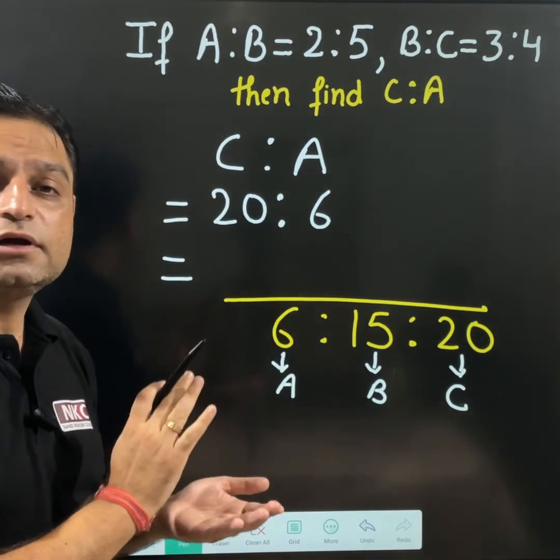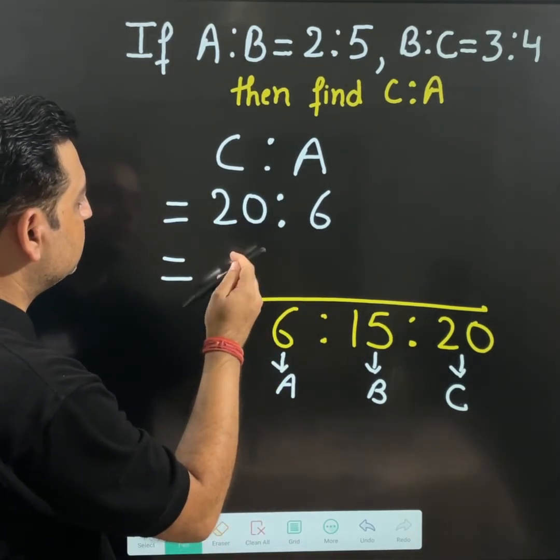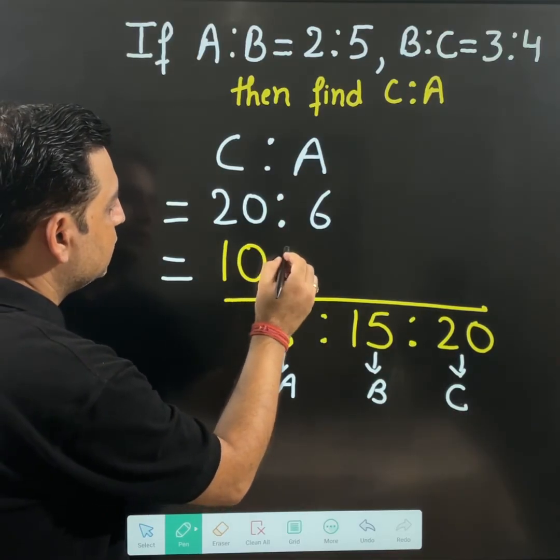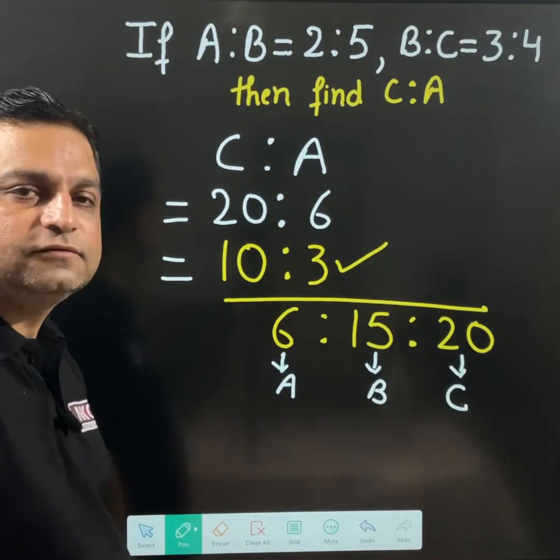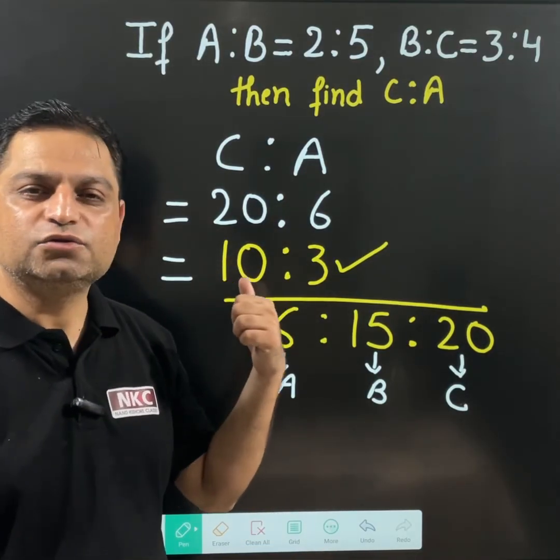20 and 6 both are divisible by 2. If both are divisible by 2, then 10 ratio 3. This is the answer. C ratio A is 10 ratio 3.